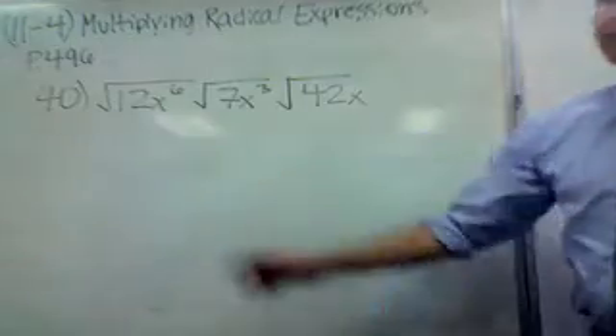Number 40 is root 12x to the 6 times root 7x cubed times root 42x. We break them down just like we did before. It doesn't matter that we have three radicals. No different than what we've been doing. You break them down. Break each of them down. You break them down until you can't break them down anymore. And once you've broken them all down, put them back together.